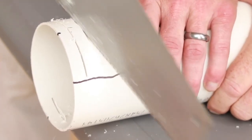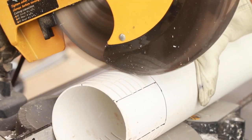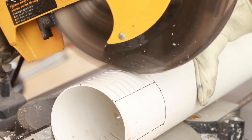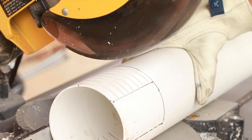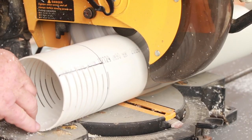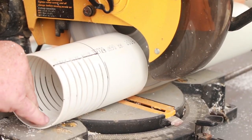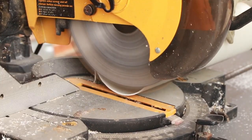A chop saw makes this process much easier. Move to the next dot up the pipe and continue this process until you have 8 slits on either side of the pipe. This should allow enough water flow through the outer sleeve to enable the bell siphon to work properly.